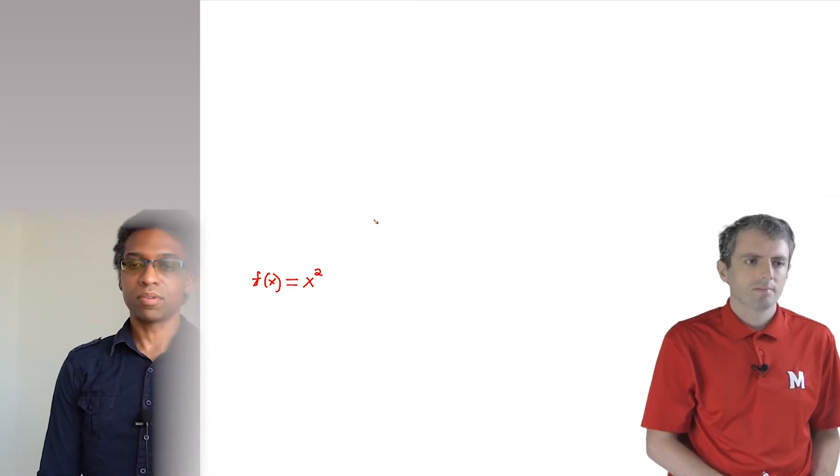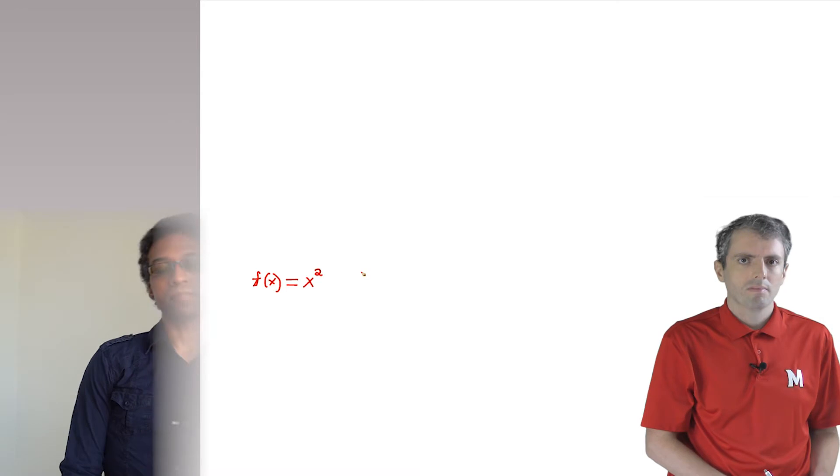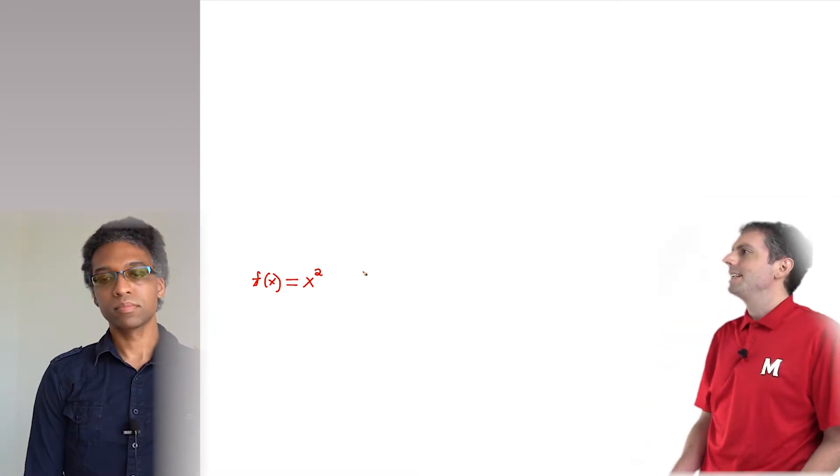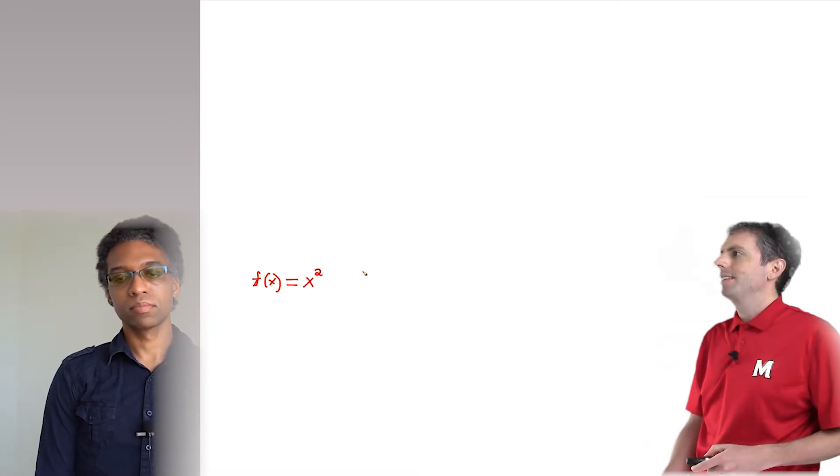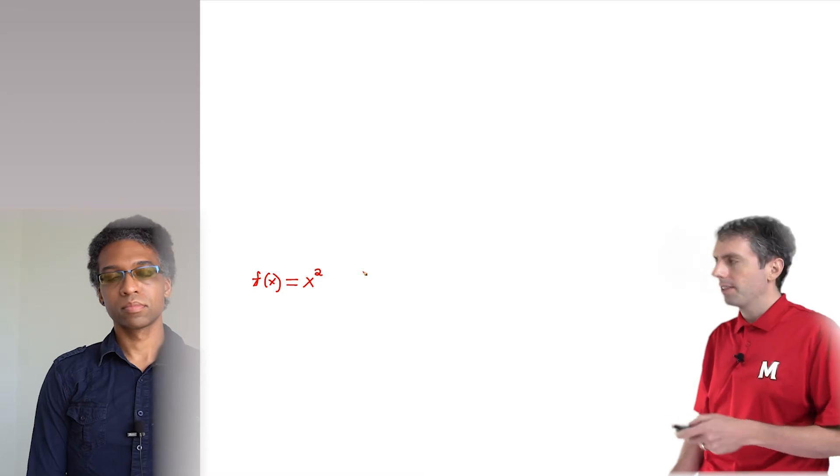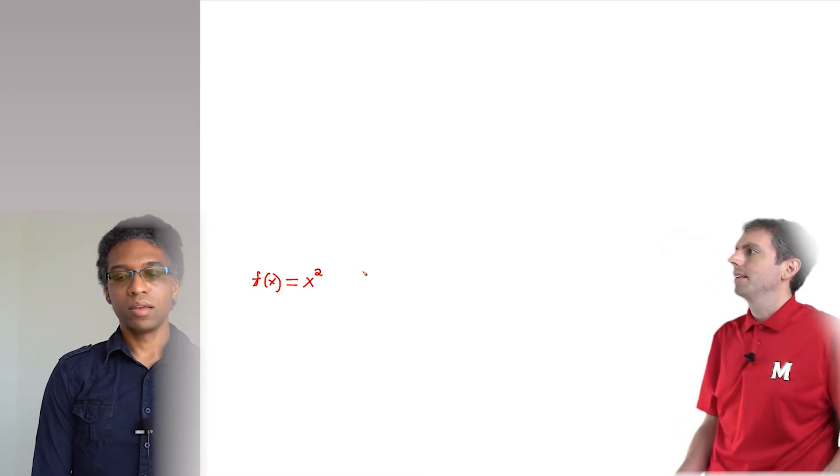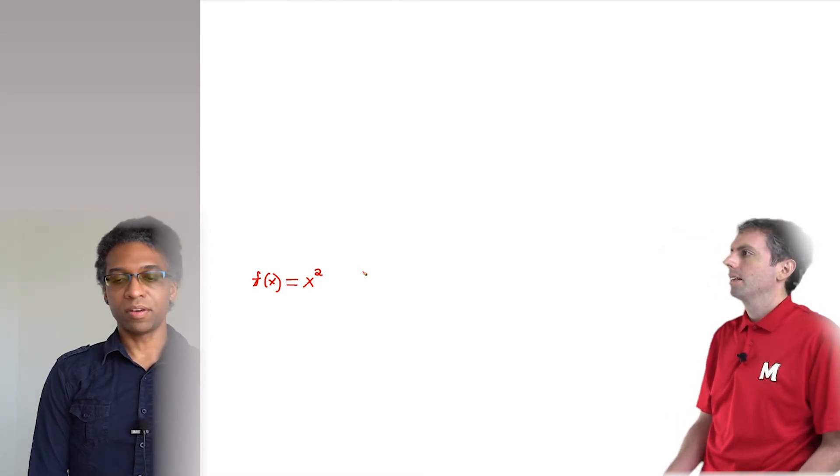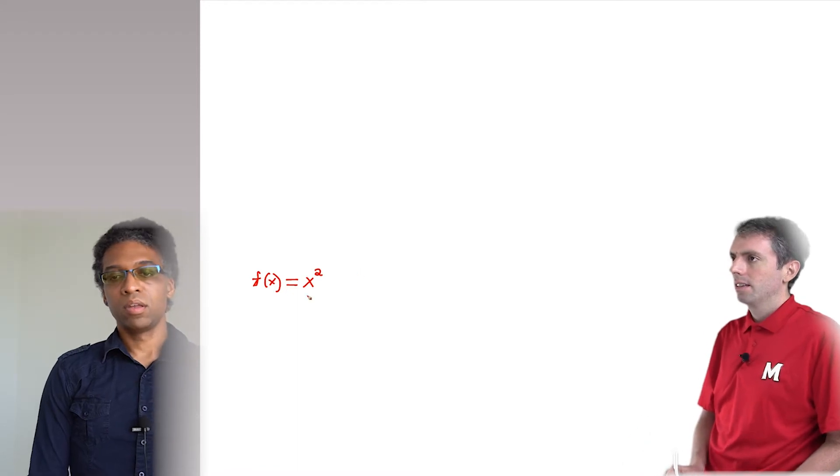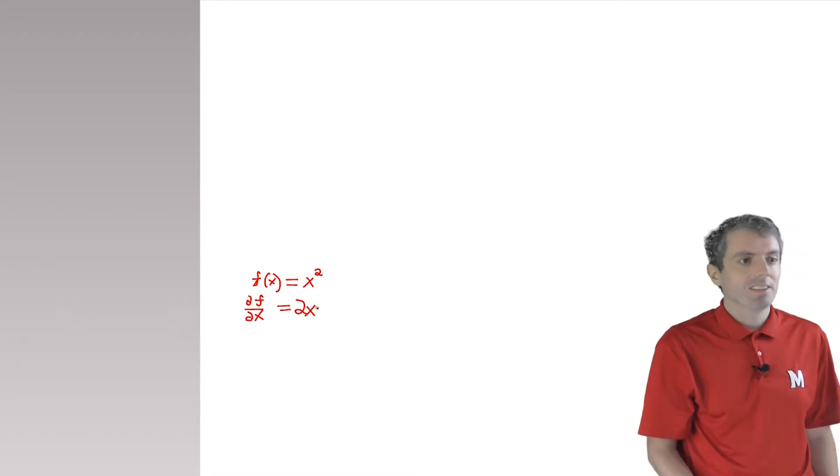Let's take a function that takes the number x and squares it. Okay, I remember enough calculus to know that the derivative of this function is 2x. That's right. And because this is a function of only a single variable, that's the gradient with respect to x. Okay, so we write it like this.